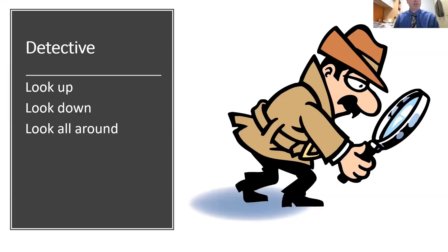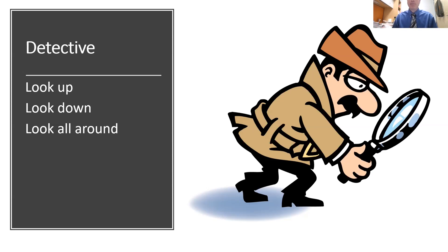I recommend you be a detective. As far as tree ID: look up, look down, look all around. If you find enough parts of the tree during wintertime — see everything with your binoculars, get some things in hand, use all your senses — then you should be able to get it down to species.